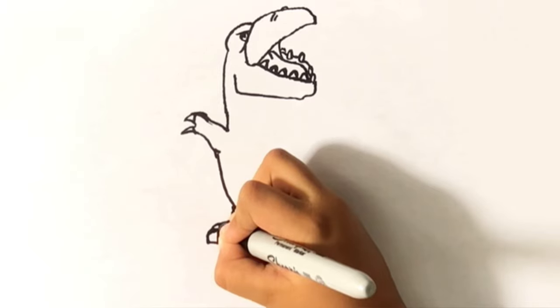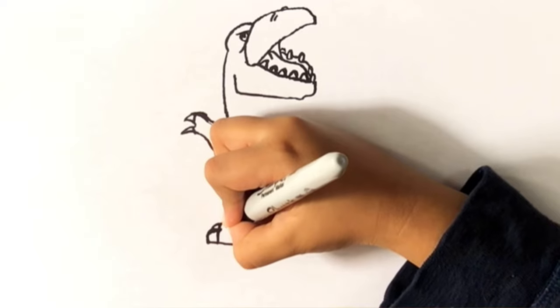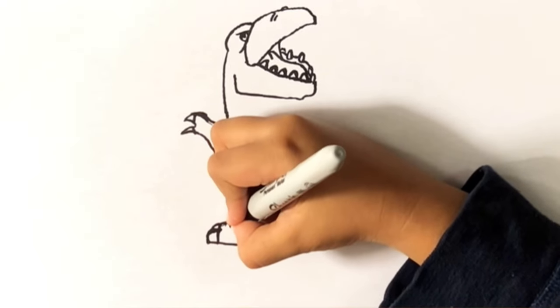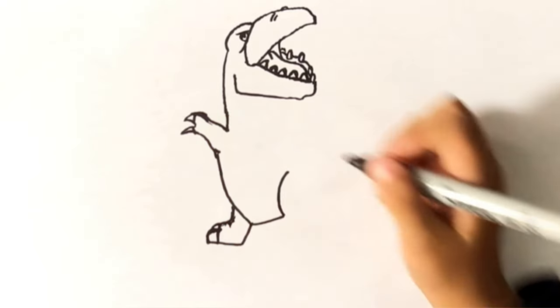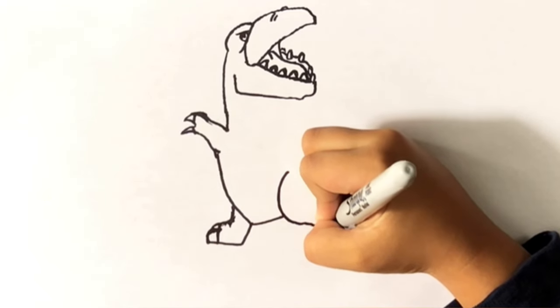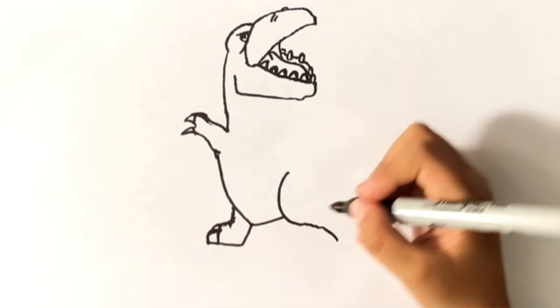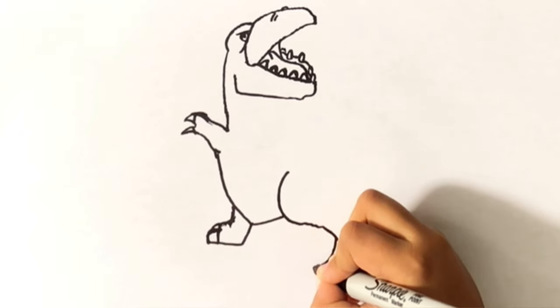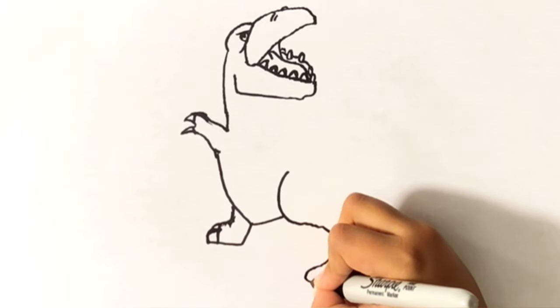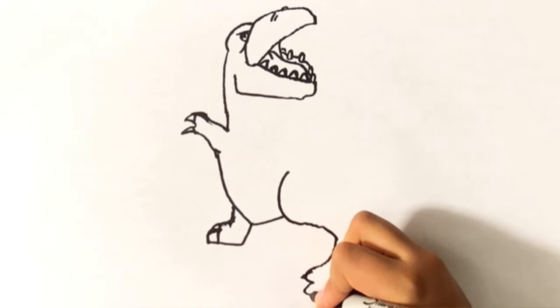Then we go like this. Like there. There we go. Then we go like that for the other leg. Then we go like that. Okay, that's what we're doing on the other one, drawing the shape first.